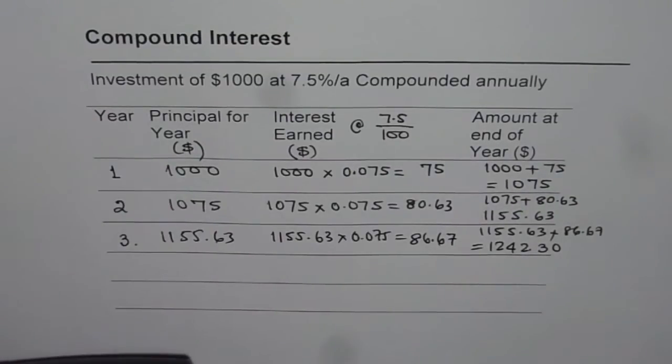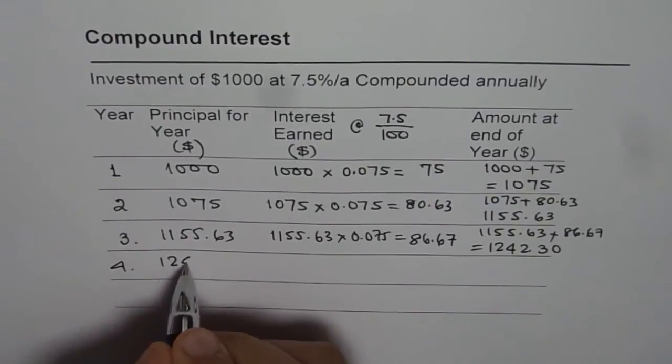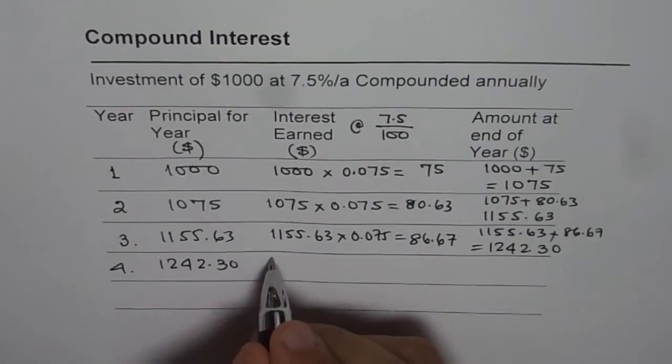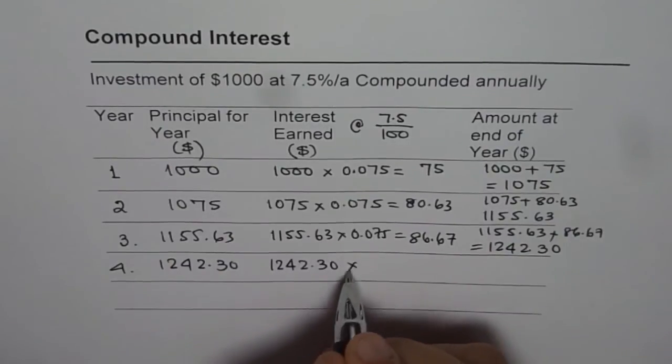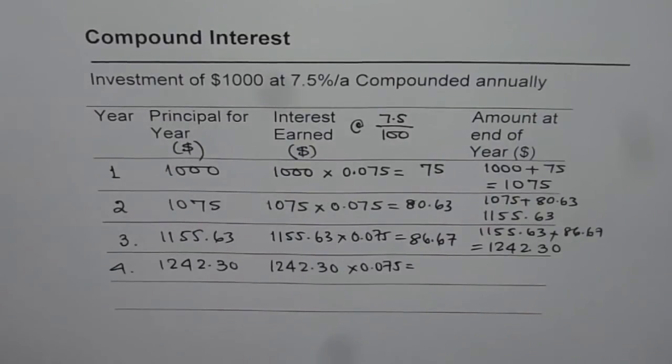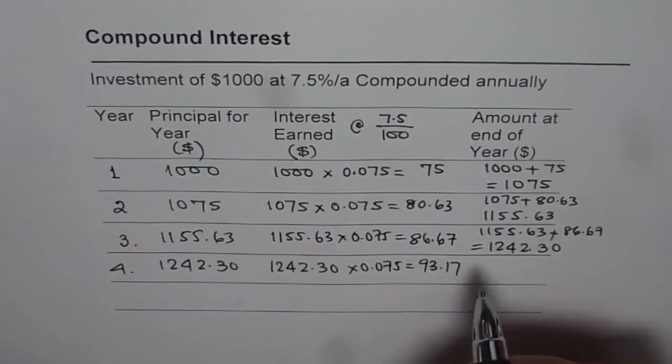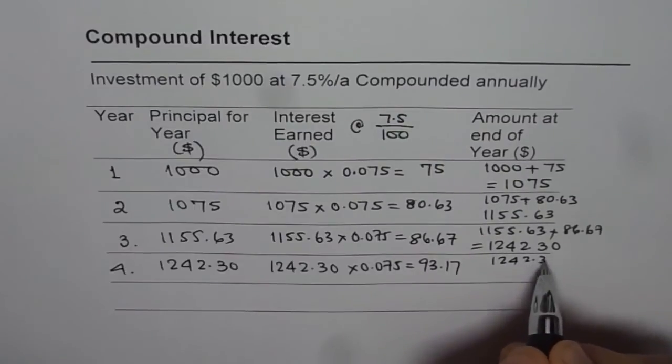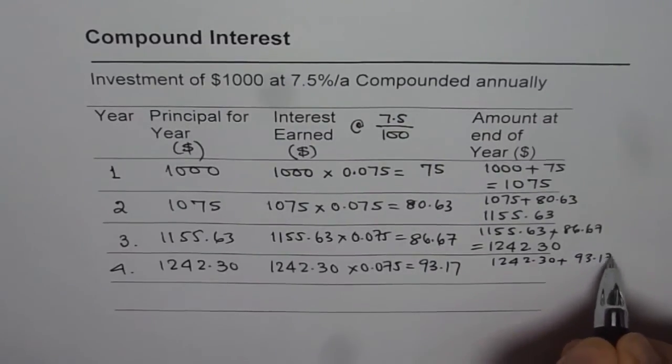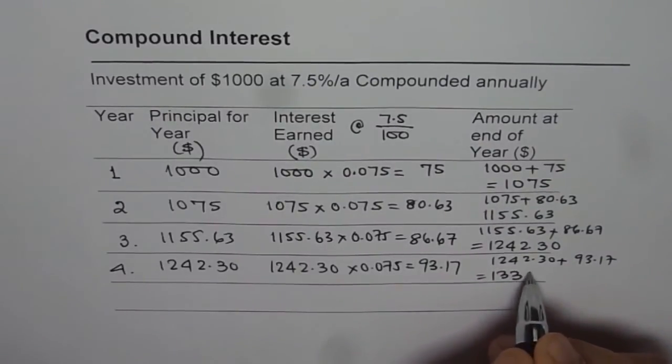Now 1,242.30 is going to be considered as the principal amount for the fourth year. Interest will be earned on 1,242.30 times 0.075. That gives us 93.17. At the end of the year, the value will be 1,242.30 plus 93.17. Let us add the two. It gives us 1,335.47.